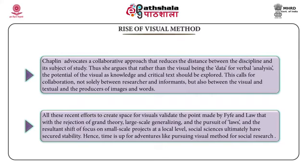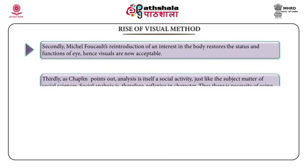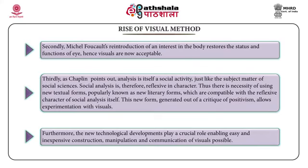At the local level, social sciences have ultimately secured stability. Hence, the time is right for adventures like pursuing visual method for social research. Secondly, Michel Foucault's reintroduction of an interest in the body restores the status and functions of the eye, making visuals now acceptable. Thirdly, as Chaplin points out, social analysis is a reflexive activity, necessitating new textual forms — popularly known as new literary forms — compatible with the reflexive character of social analysis itself. This new form generated out of a critique of positivism allows experimentation with visuals. Furthermore, new technological developments enable easy and inexpensive construction, manipulation, and communication of visuals.